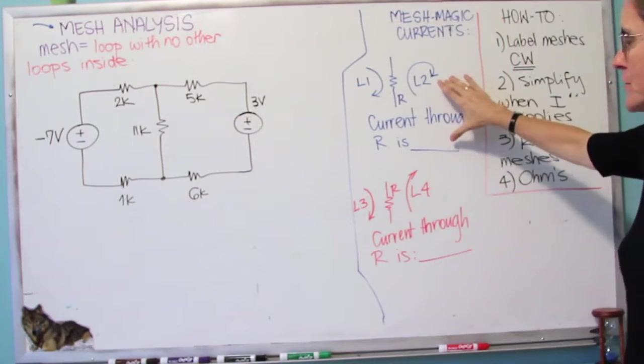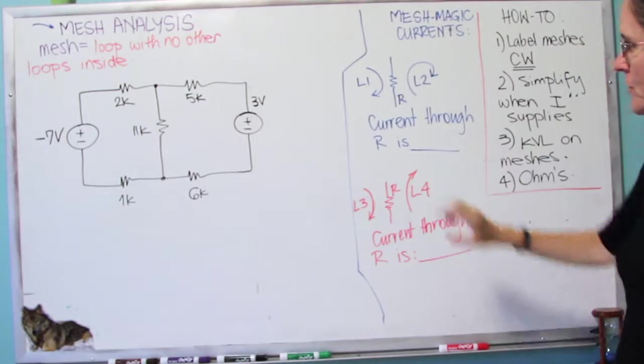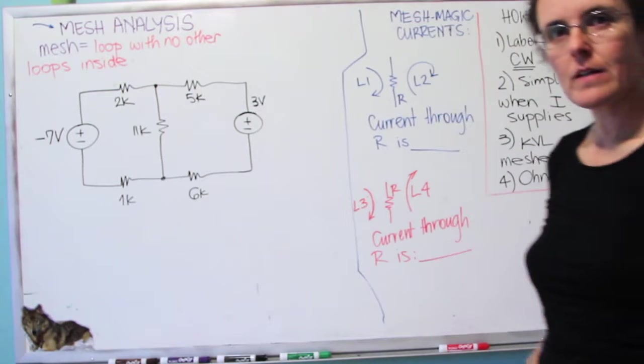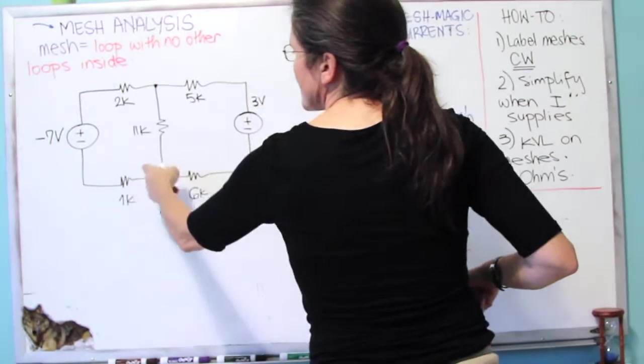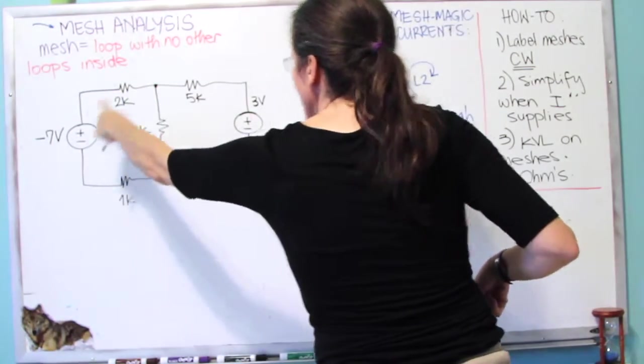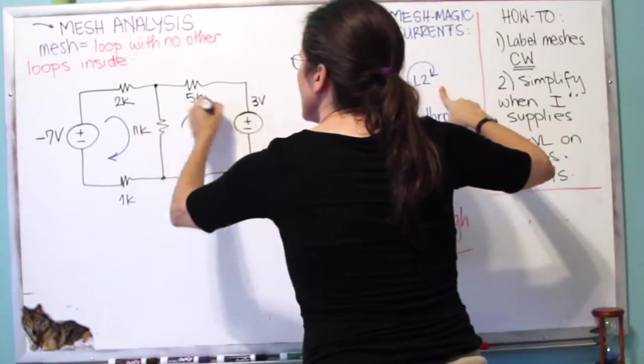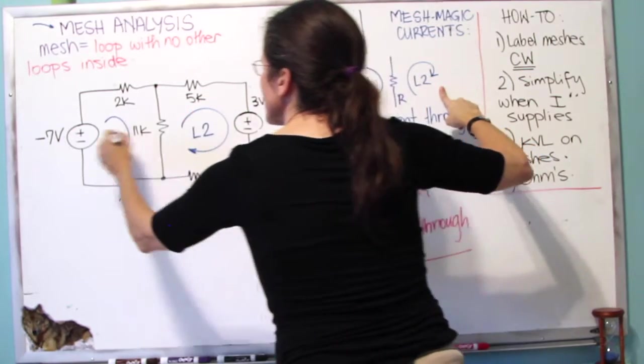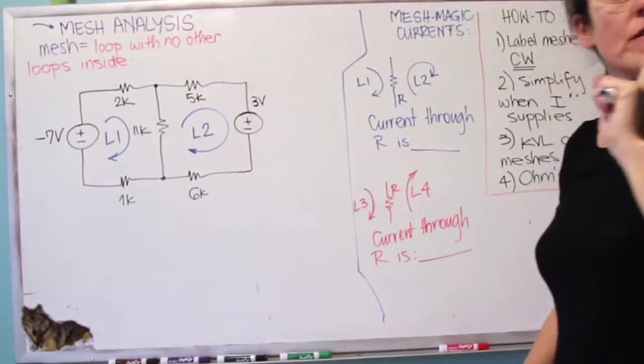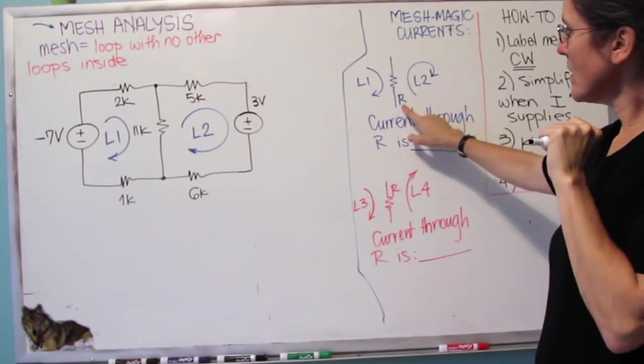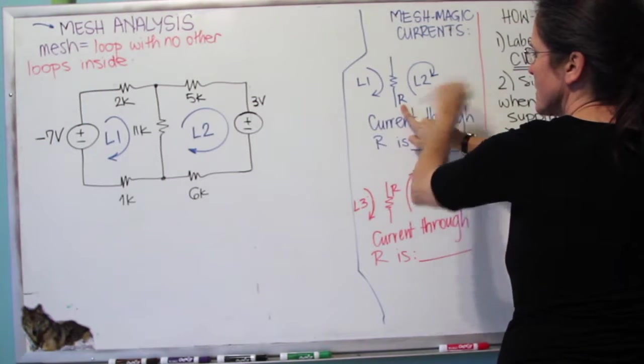But first I would like to say that you will eventually find that you need to define the current through a resistor as a function of the mesh currents. So the mesh currents are currents that go through the outer part here, but go around. So eventually when we define these in our loops here, which are really meshes, you're going to have a resistor in the middle of the two meshes that happens to be like this, with a current on this side and a current on this side.